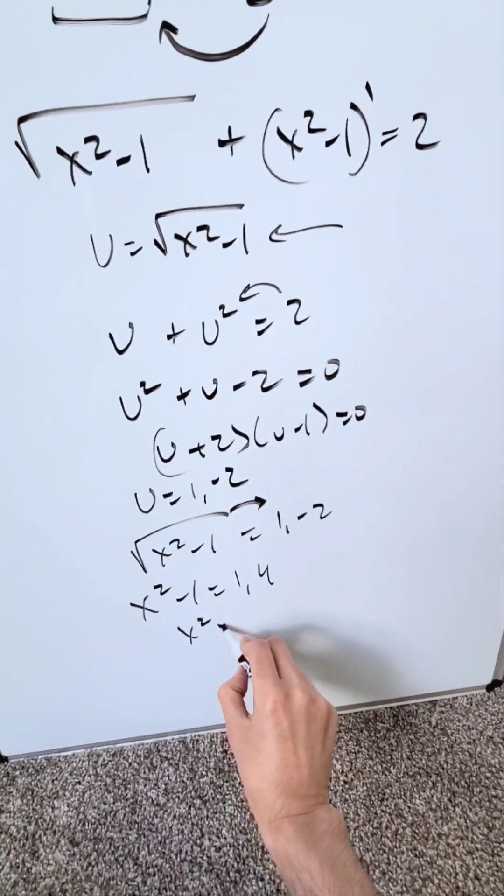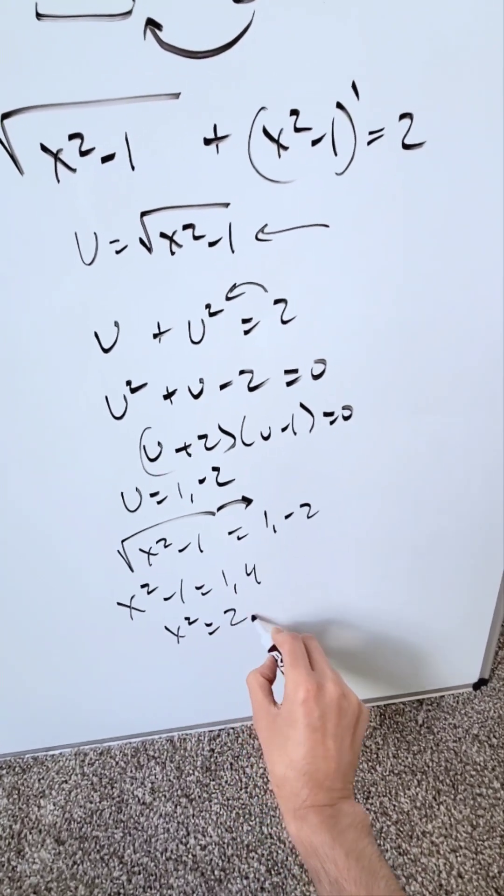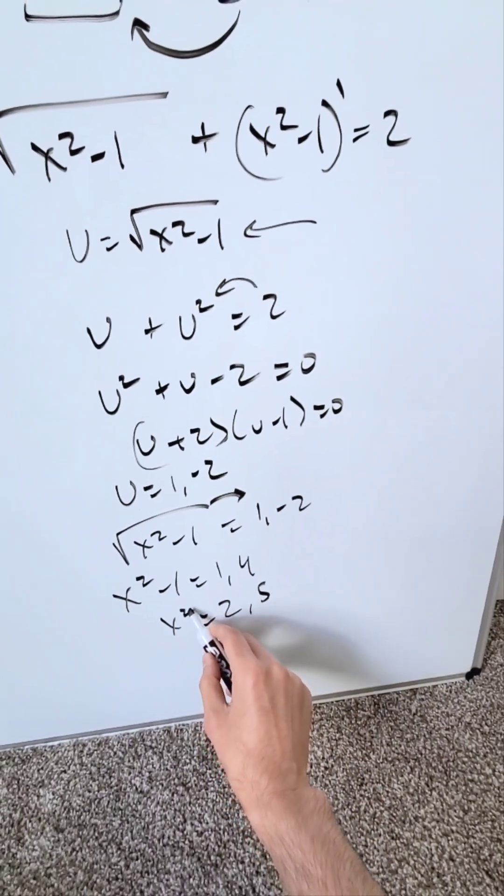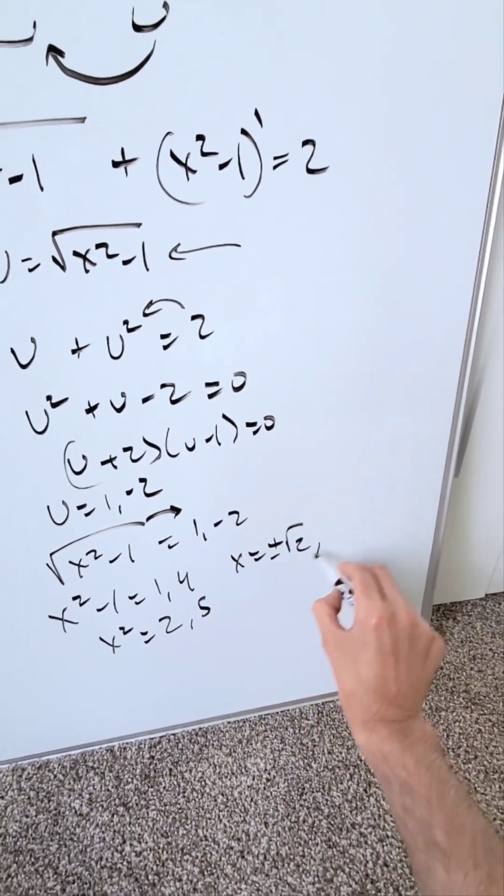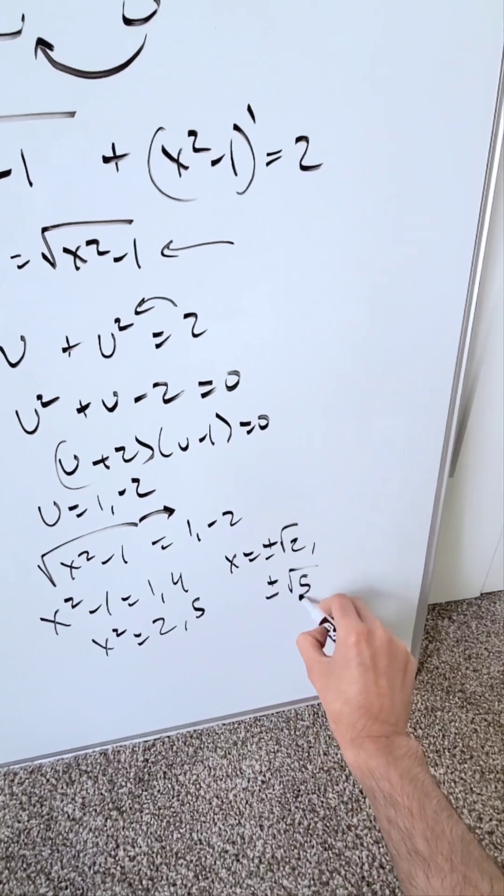So x² = 2 or x² = 5. Taking the square root gives x = ±√2 or x = ±√5.